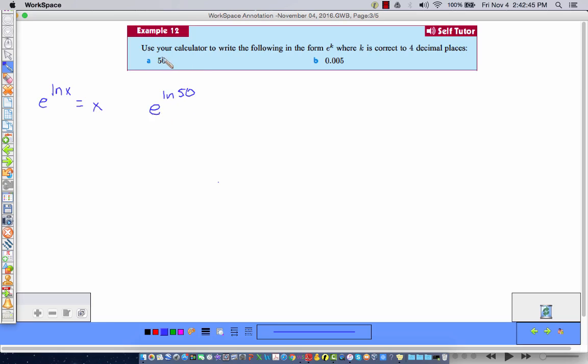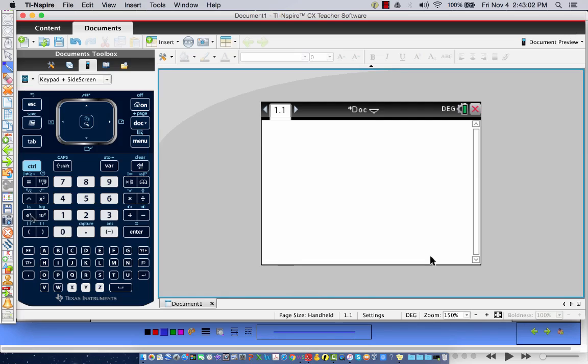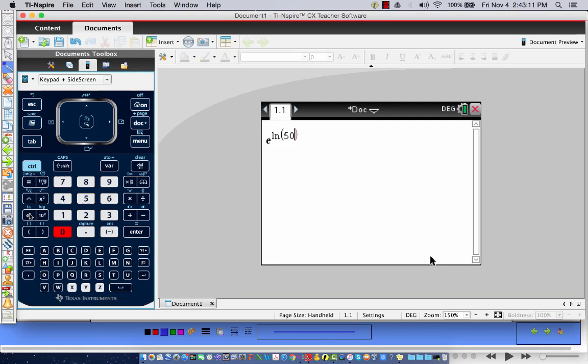So I've got 50. So I'm going to write E to the natural log of 50, right? Use your calculator to write the following in the form E to the K where K is correct to four decimal places. Okay? And so that becomes, using our calculator, E to the natural log of 50. That's right here, E. And the natural log button is right above the E. So I hit Control, natural log of 50.